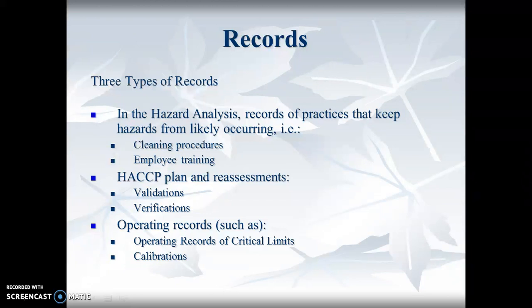Three types of records: In hazard analysis, records of practices that keep hazards from likely occurring, such as cleaning procedures and employee training - trained employees can identify issues more easily. HACCP plan and reassessments, including validations from challenge tests where you actually inoculated your food product, and verifications. Operating records such as records of critical limits and calibrations - how often did you calibrate those thermometers?